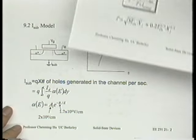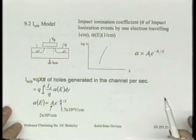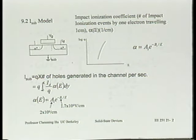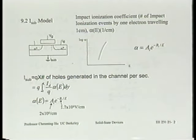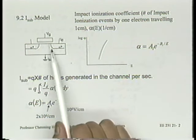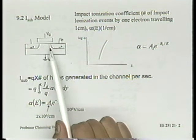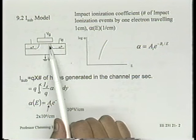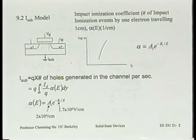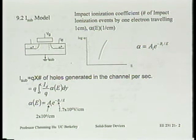Now we're ready to look at the second half of the problem: given E_M — suppose we know E_M is 3×10^5 V/cm — can we figure out what kind of substrate current to expect, how much degradation of the IV curve will happen, and what the breakdown voltage is? So we're going to do the second half today. We start by looking at substrate current.